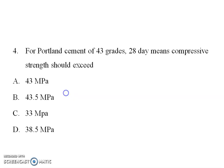Next question: For Portland cement of 43 grade, the 28-day mean compressive strength should not be less than the minimum value. The minimum compressive strength for 43 grade cement is 43 MPa.